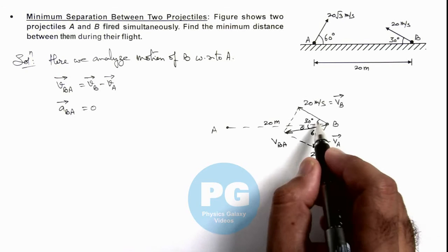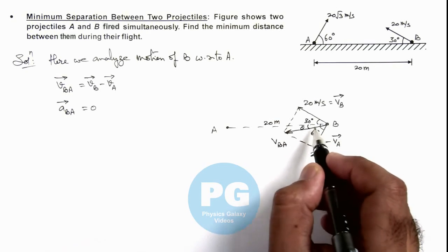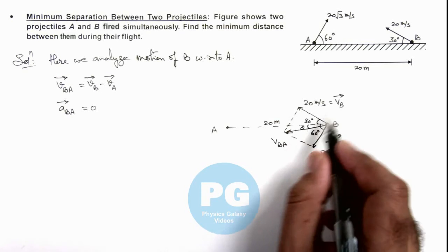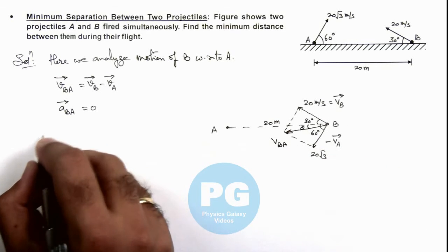In this situation this whole angle 30 plus theta is the angle between v_BA and v_B. So here we can write the angle between v_B vector and velocity of B with respect to A vector.